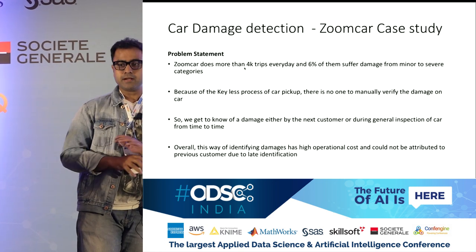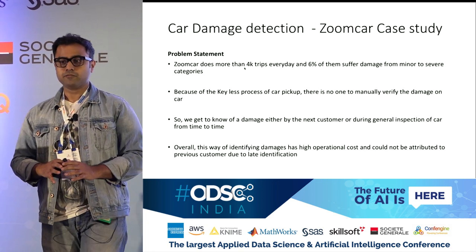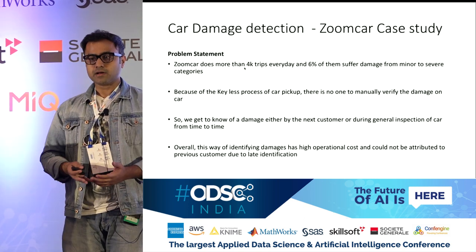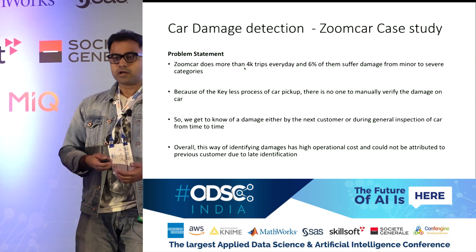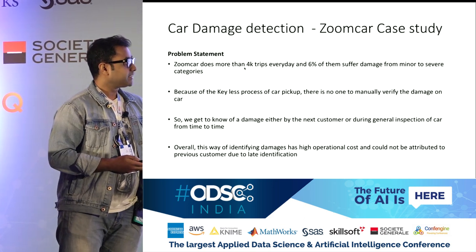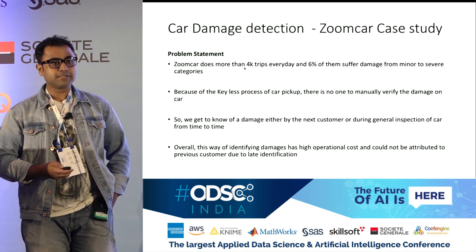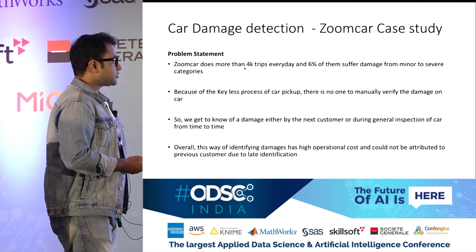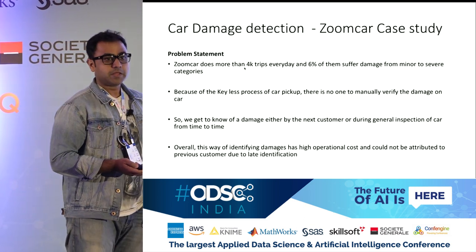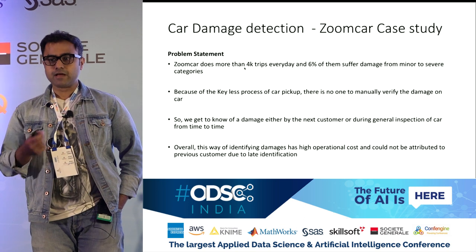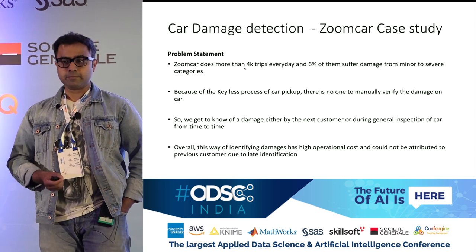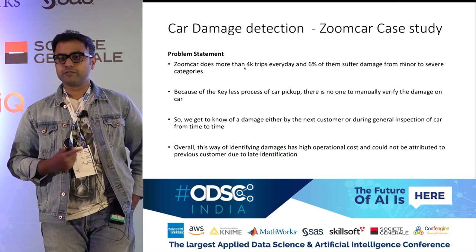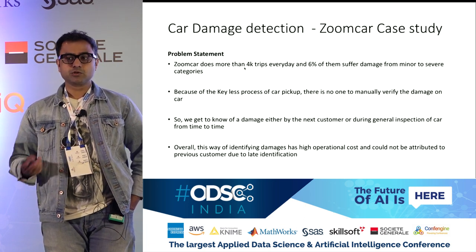This happens because we have a completely manless service. You will not find fleet staff to assist you in picking up the car — you can open, lock, and unlock the car through an app. That means there is no one to monitor whether damage is happening, who caused it, or whether it should be rectified. When the next customer comes to pick up the car, we have a checklist where they mark if the car is already damaged. That's how we get to know, or through a general inspection after every two bookings.